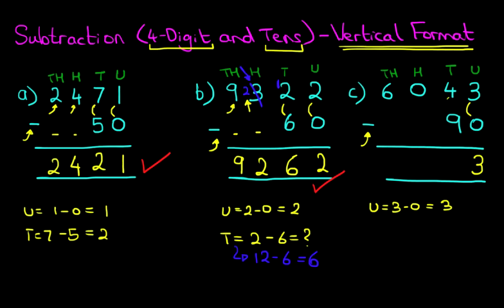Now, the tens column. We've got 4 minus 9. 4 minus 9 is something we cannot do because 4 is smaller than 9. So, what we have to do is take 1 from the column on the left — the hundreds column. But hold on: the hundreds column is 0, so we cannot do that.